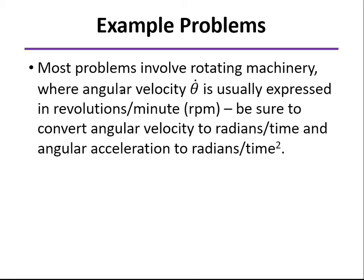Most of the problems involve rotating machinery, and so you're getting an angular velocity theta dot. And a lot of times that is expressed in rpms, revolutions per minute. So whenever you have that as the case, make sure that you convert angular velocities such that it's in radians per time, and make sure that angular acceleration would be in radians per time squared, usually radians per second and radians per second squared. Otherwise, because radians is a dimensionless quantity, if you use degrees or revolutions, then your units won't come out correctly.